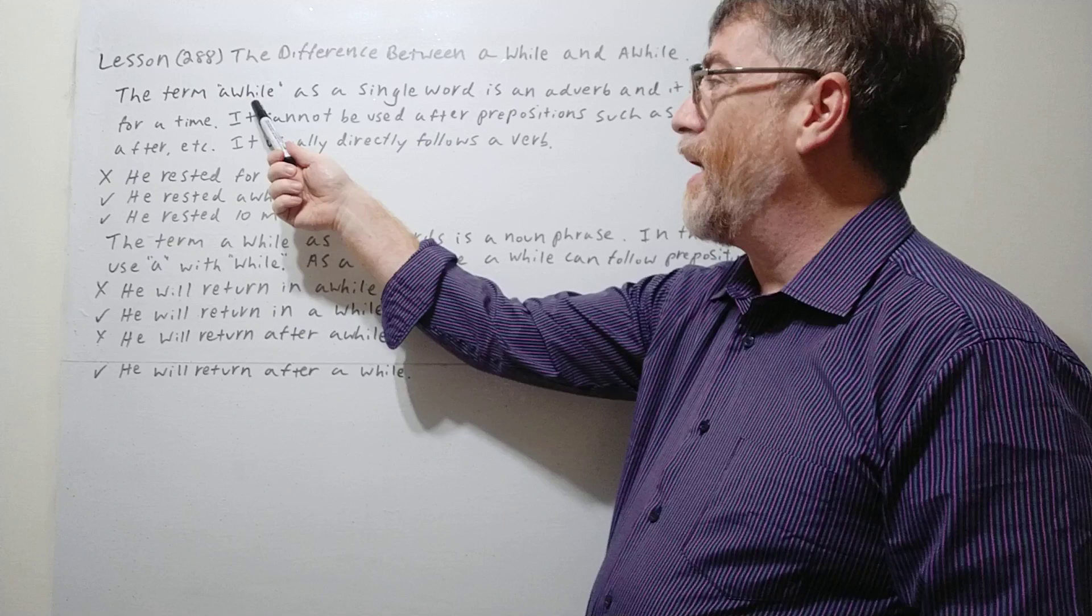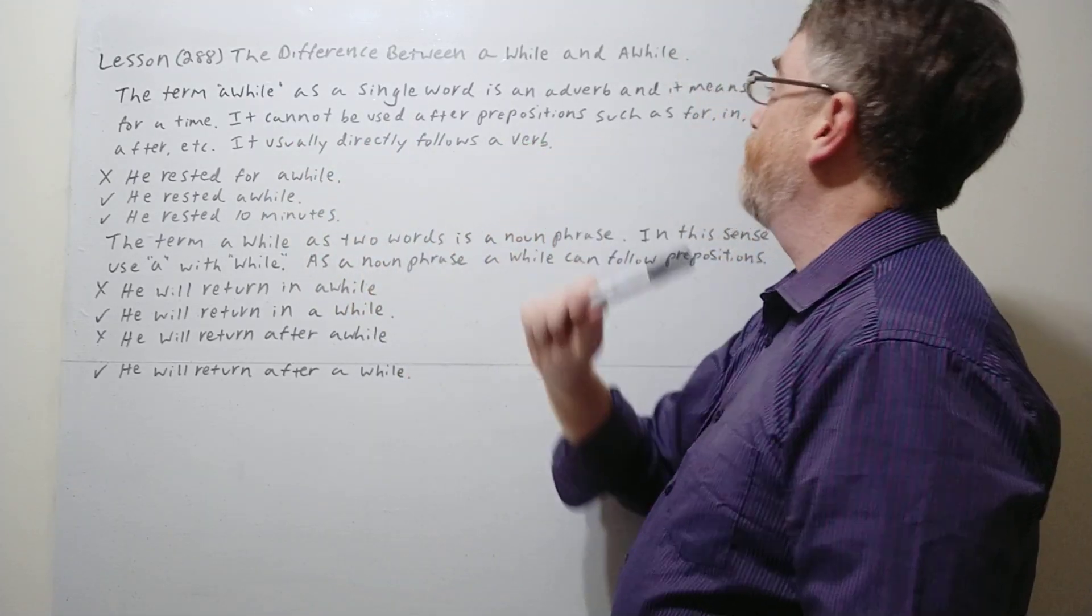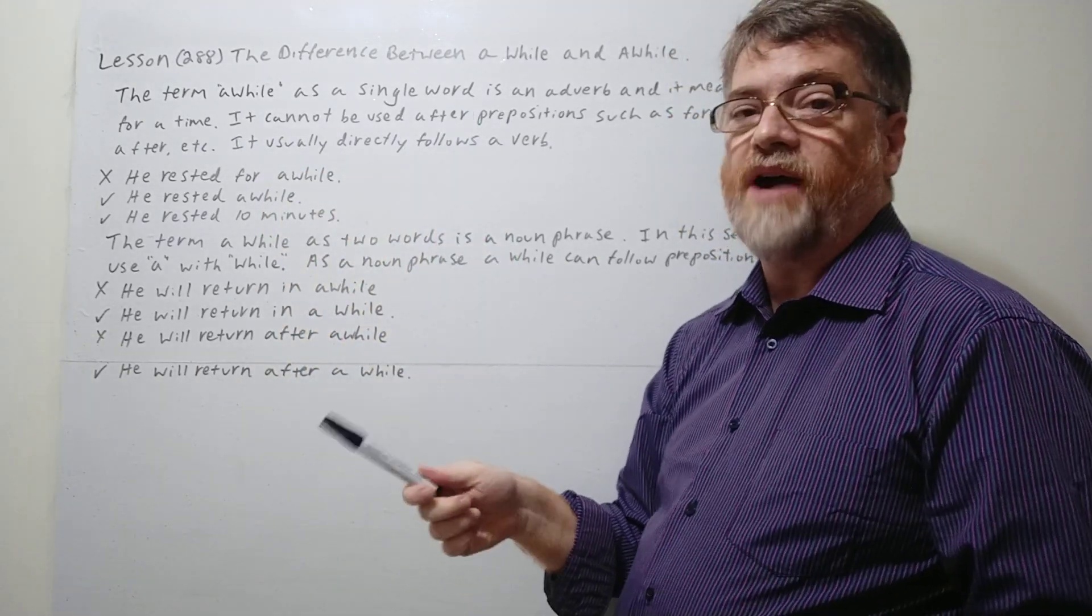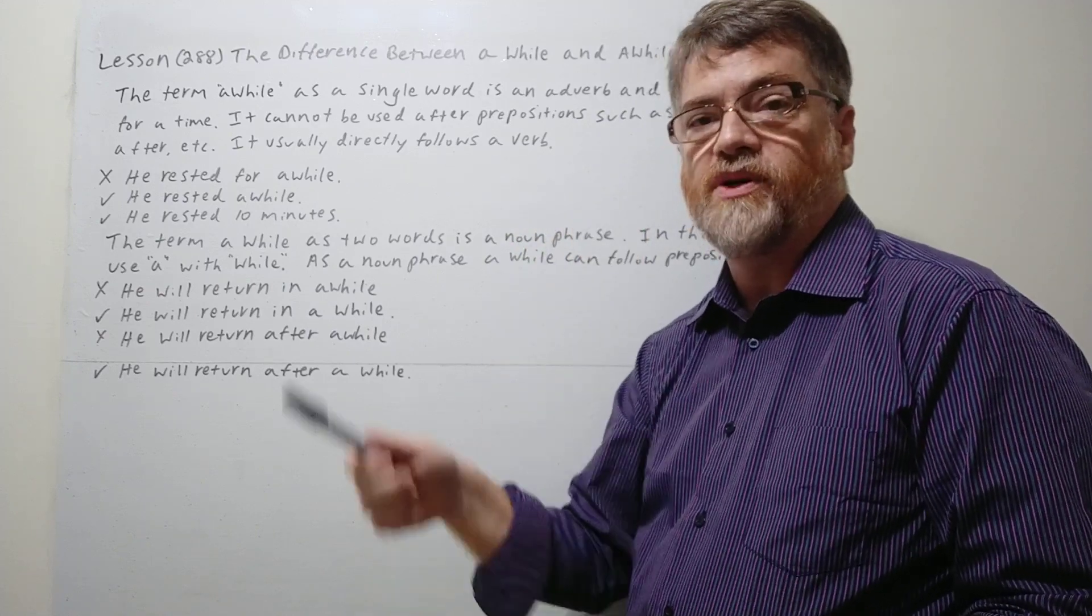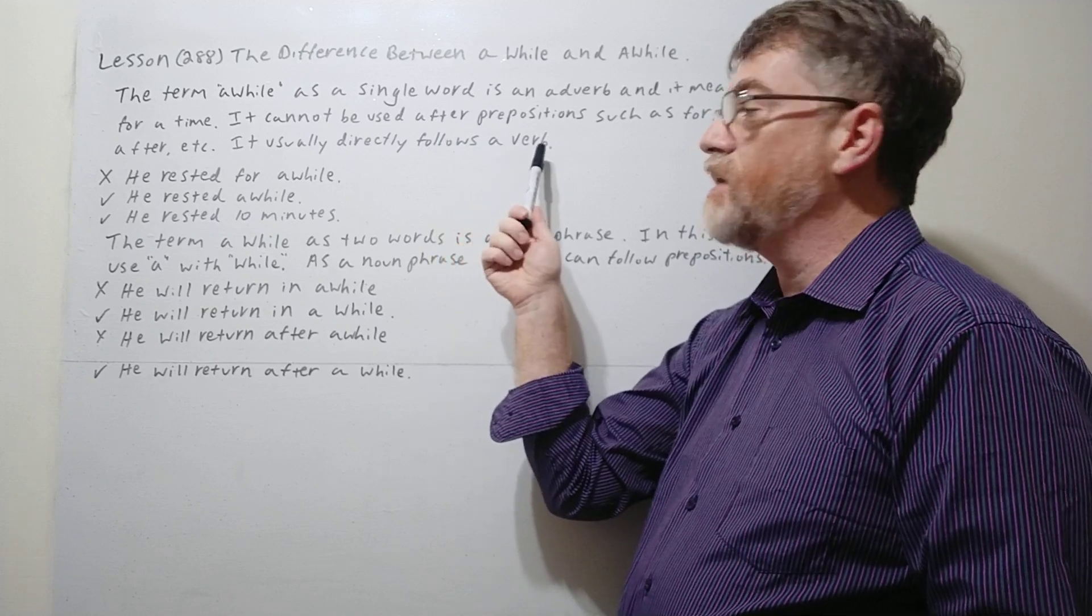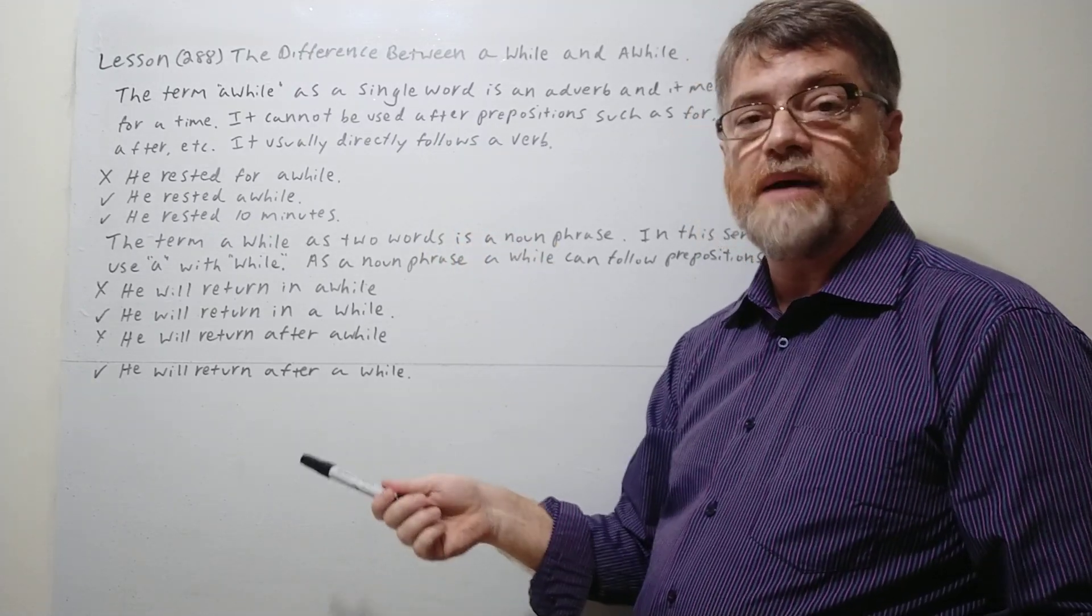Let's take a look at the note here. The term awhile as a single word is an adverb and it means for a time. It cannot be used after prepositions such as for, in, after, etc. It usually directly follows a verb.